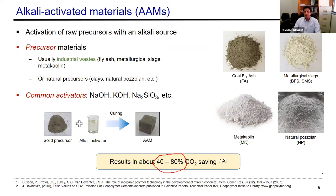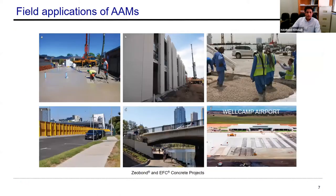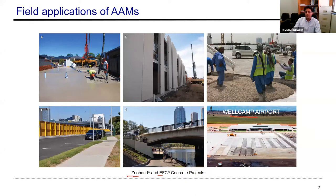There are other options as well — this is not the only one. This is one of the alternatives we are trying to introduce in this webinar. There have been some demonstrations in field applications. For example, two companies, ZeoBond and EFC, mainly based in Australia, have done some demonstrations. This has been used even for an airport, where the whole airport structure was made using alkali-activated binders. This shows they have potential — they are at a developed stage and can be used for field applications.